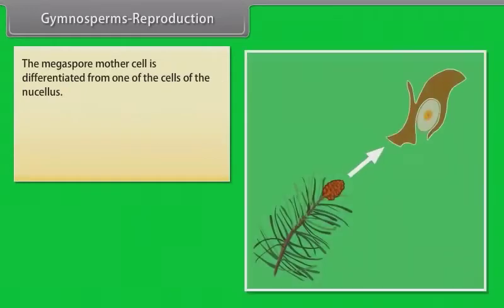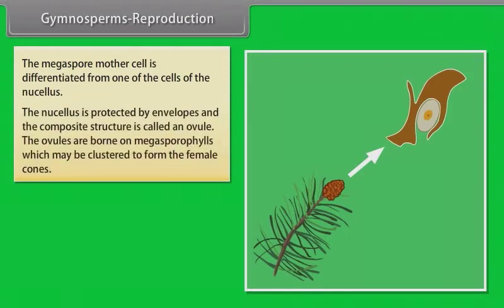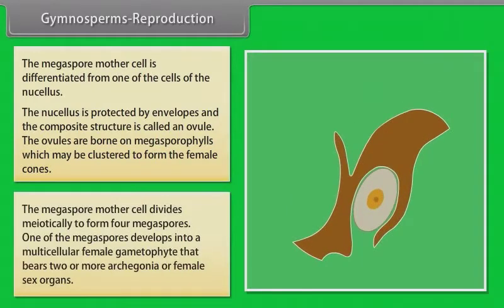Reproduction in Gymnosperms. The megaspore mother cell is differentiated from one of the cells of the nucellus. The nucellus is protected by envelopes and the composite structure is called an ovule. The ovules are borne on megasporophylls which may be clustered to form the female cones. The megaspore mother cell divides meiotically to form four megaspores. One of the megaspores develops into a multicellular female gametophyte that bears two or more archegonia or female sex organs.